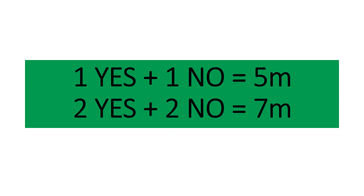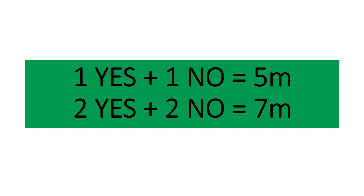Like I said, one yes, one no is five marks. Two yes, two no is seven marks. For students who already have the yellow-colour paper, you can do this. For those of you who don't have the yellow-colour paper because you were absent, I'm going to send this as a PDF so you can do this before lesson tomorrow. I hope this video will help you revise for your assessment.